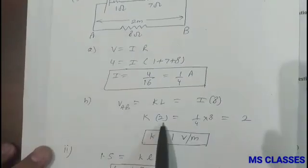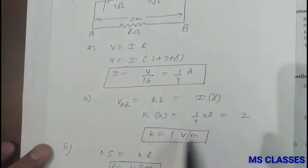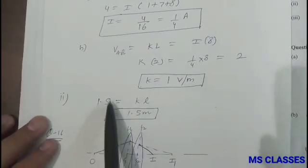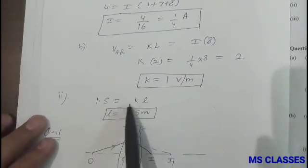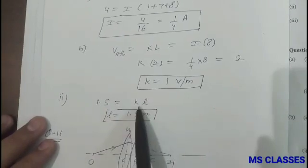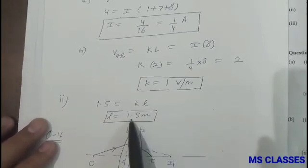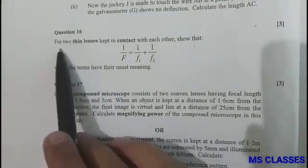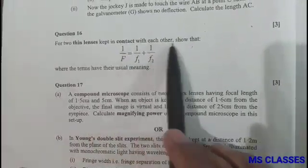So that K is coming 1 volt per meter. And the second part, when no current is withdrawn when the jockey is in touch, so E is equal to KL. E is 1.5, K is 1, so that L is coming 1.5 meter. Question 16: For two thin lenses kept in contact with each other, show that 1 by F is 1 by F1 plus 1 by F2.